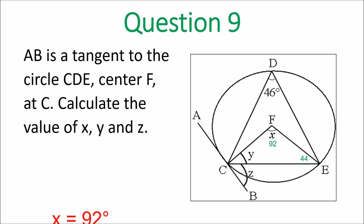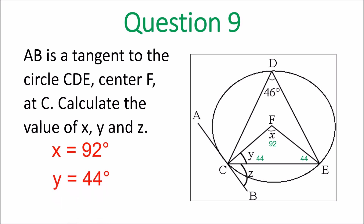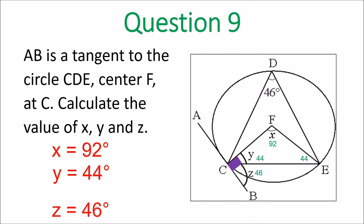Question 9. X is 92 because it's double 46. Y is 44 — base angles in that isosceles triangle. And then Z: we know that's a 90 degree angle there, so it's 90 minus 44, giving 46 for Z.